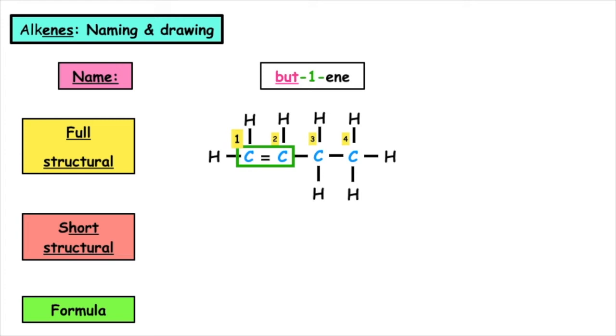To take the shortened structural, we take each carbon by itself. So I have CH2, CH, CH2, then CH3. The molecular formula for this is C4H8.